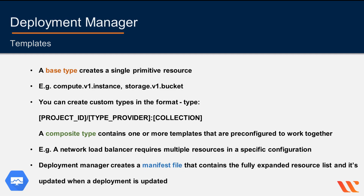A manifest is a read-only object that contains the original configuration you provided, including any imported templates, and also contains the fully expanded resource list created by the deployment manager. When a deployment is updated, the deployment manager generates a new manifest file. Because it's read-only, it can't be edited.